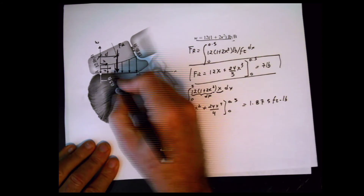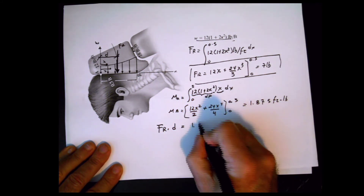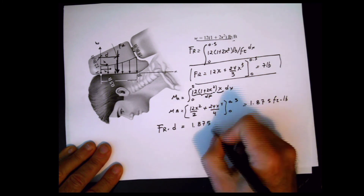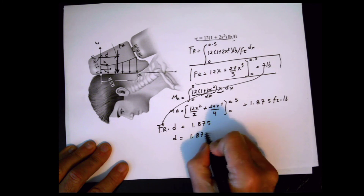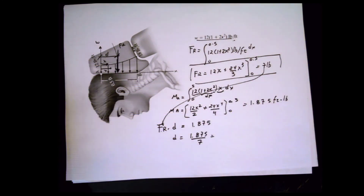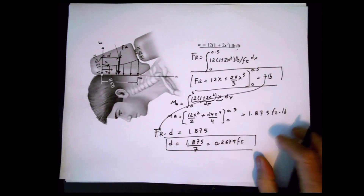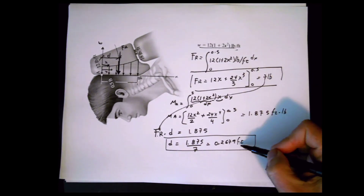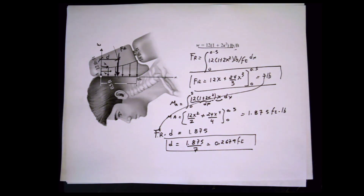Now if I place the resultant force at distance d, it must produce the same moment of 1.875 foot-pounds. The resultant force is 7 pounds, so d equals 1.875 divided by 7, which gives 0.2679 feet. The foot-pound and pound units cancel, leaving feet. Final answer: resultant force of 7 pounds located at 0.2679 feet from point A. Problem solved — see you next time, thank you for watching and learning!